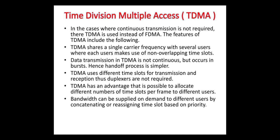TDMA has the advantage that it is possible to allocate different numbers of time slots per frame to different users. Bandwidth can be supplied on demand to different users by concatenating and reassigning time slots based on priority.